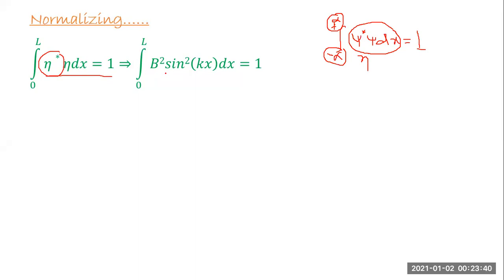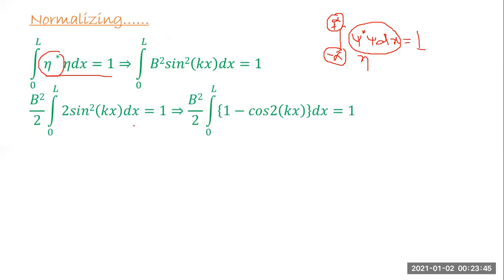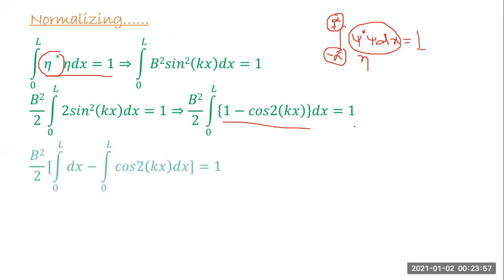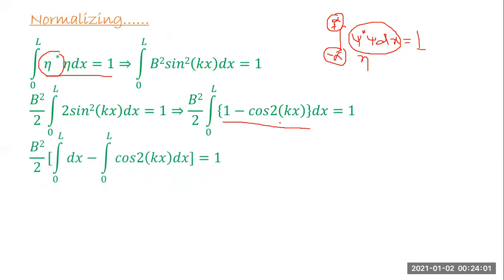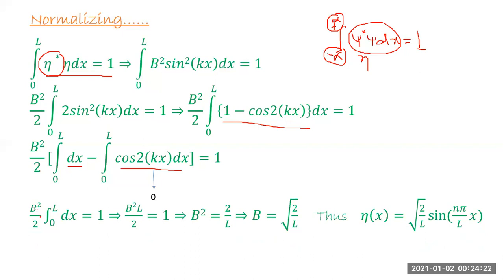Taking B² outside and using the identity 2sin²(kx) = 1 − cos(2kx), we integrate from 0 to L. The cosine term integrates to zero over the full period, leaving (B²/2)·L = 1. This gives B² = 2/L, so B = √(2/L).